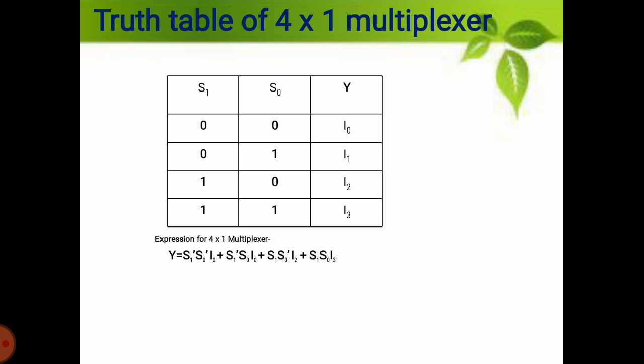So, the expression for the 4-to-1 multiplexer is: Y equals S1 complement, S0 complement, and i0. For 0, it is complement, and for 1, non-complement and variable. So the value of S1 is 0 and S0 is 0, giving S1 complement and S0 complement and i0. Plus, come to the second row: S1 complement (because S1 is 0) and S0 without complement (because S0 is 1), so S1 complement then S0 then i1.